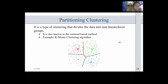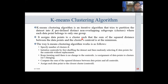Partitioning clustering is a type of clustering that divides the data into non-hierarchical groups. A partition algorithm divides the dataset into groups, and then each of those is further divided. It is also known as the centroid-based method. The cluster center is created such that the distance between the data points of one cluster is minimum as compared to another cluster's centroid.